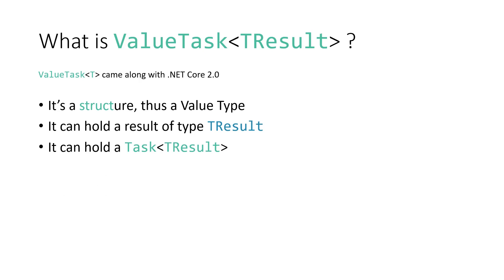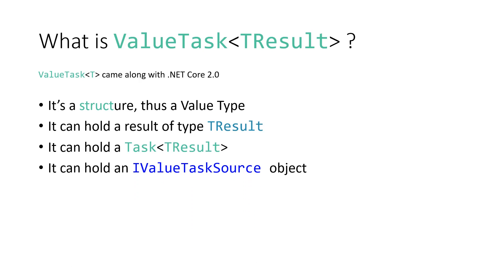ValueTask is not a value-type version of Task — it is just a wrapper that can hold a TResult or a Task of TResult. But it can also hold an IValueTaskSource object. Any object that implements the IValueTaskSource interface can be wrapped by a ValueTask.